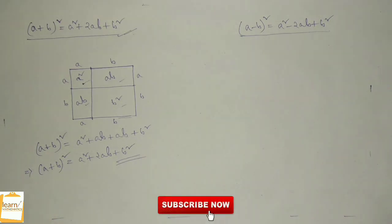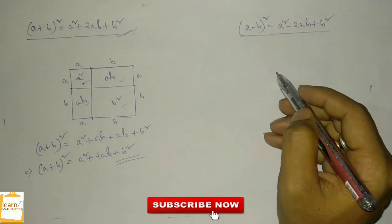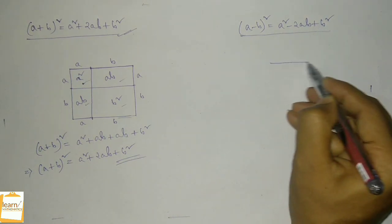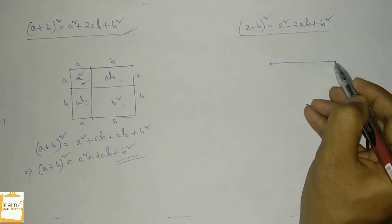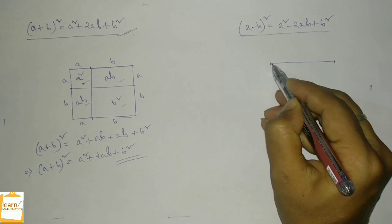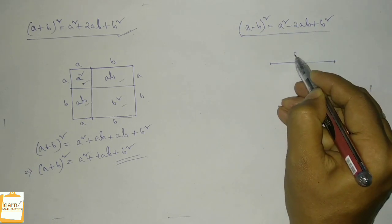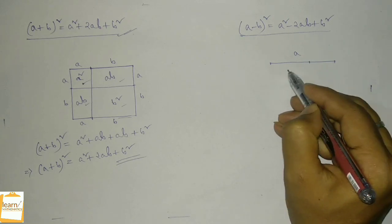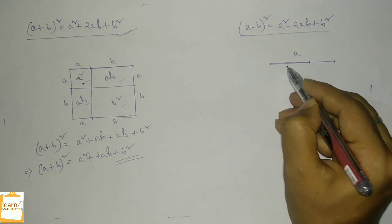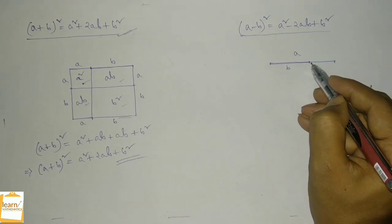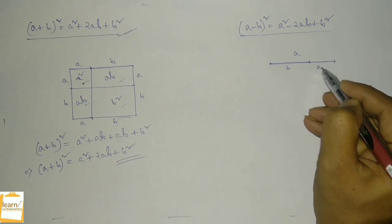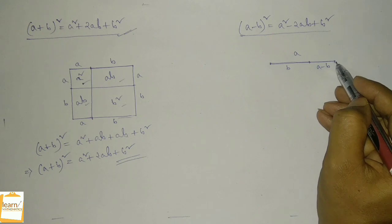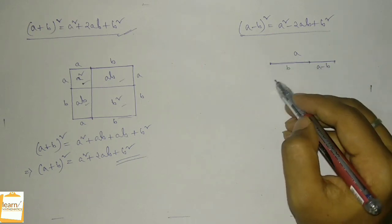Now let us discuss the a minus b whole square formula. To explain this, let us again draw a straight line where the length of the straight line is a. Let me take one point here such that the length of this portion is b, so clearly the length of this portion is a minus b. Now using this straight line, which is of length a, let me again draw a square.